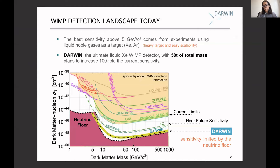These are the current limits we have right now. The idea is that with DARWIN, the ultimate liquid xenon WIMP detector, we want to increase the current sensitivity by a factor of one hundred, obtaining a sensitivity close to the neutrino floor. To do this, DARWIN will use a huge 50 tons of liquid xenon, and the idea is to be limited only by the neutrino background.